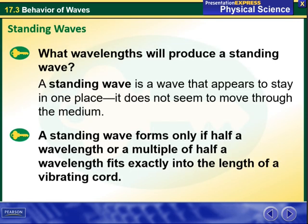And then we have standing waves. What wavelengths will produce a standing wave? A standing wave is a wave that appears to stay in one place. It does not seem to move through the medium. A standing wave forms only if half a wavelength or a multiple of half a wavelength fits exactly into the length of a vibrating cord.